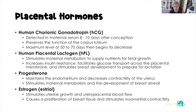That increased insulin resistance facilitates glucose transport across the placenta. HPL also stimulates breast development and helps prepare the breasts for lactation. Progesterone maintains the endometrium — that nice, fluffy, soft layer in which the egg is implanted — and it also decreases contractility of the uterus, keeping it relaxed so it's not contracting.